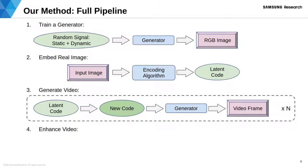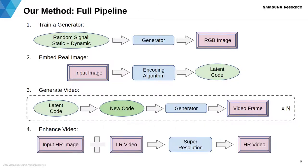We leave static inputs unchanged, preserving such objects as land, mountains, buildings, etc. Finally, we obtain a high-resolution video by blending the generated video in medium resolution with the input image, which is often available in high resolution.